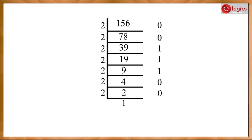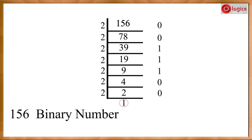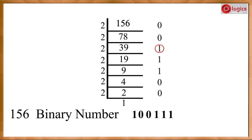Finally, the binary number for one fifty-six is: 1, 0, 0, 1, 1, 1, 0, 0. You have to take all these remainders from bottom to top in one line.